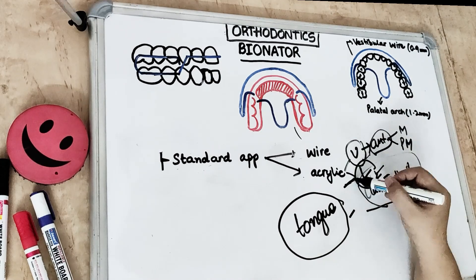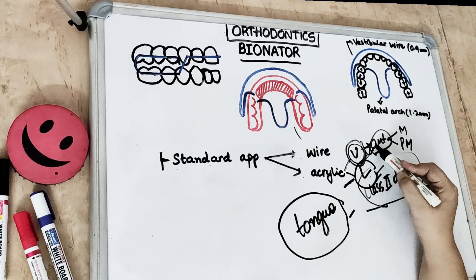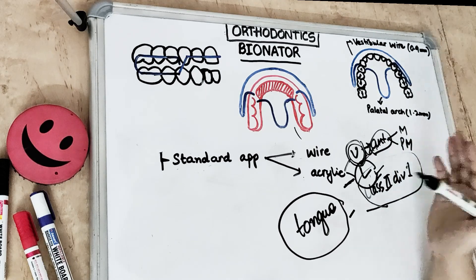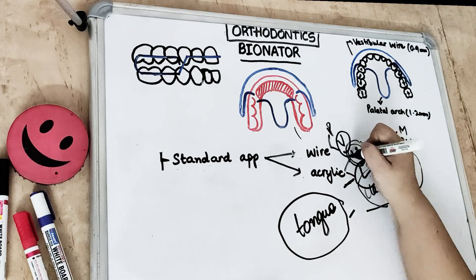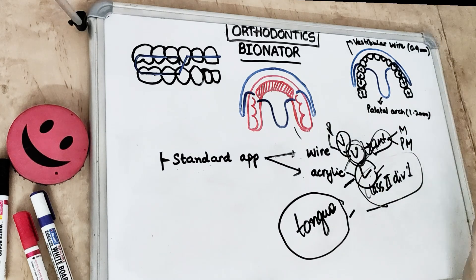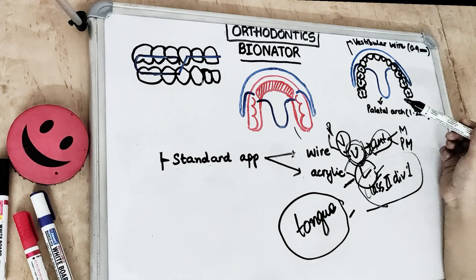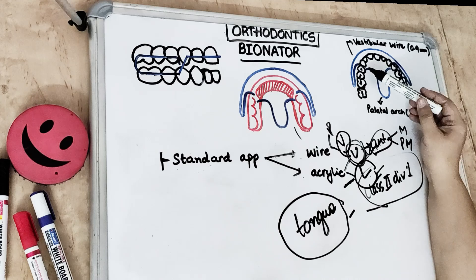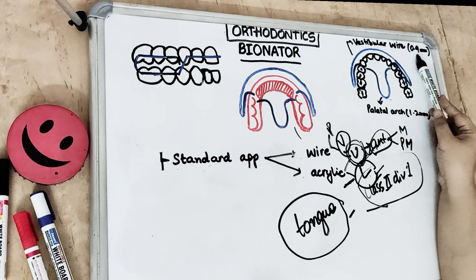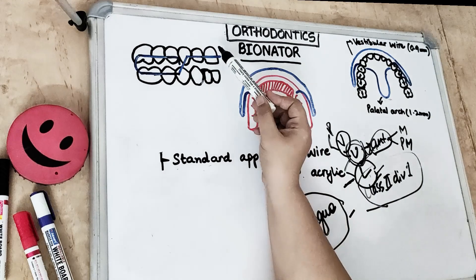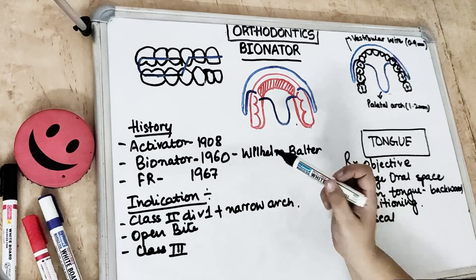The acrylic part covers the upper posterior teeth — the premolars and molars — preventing supra-eruption of the posterior teeth and acting as a posterior bite plate. The palatal arch is made of 1.2 mm wire and emerges opposite the middle of the first premolar, reaching up to the distal surface of the first permanent molar. The vestibular wire is made of 0.9 mm stainless steel wire and forms a kind of labial bow that takes a turn, which we will study in detail.